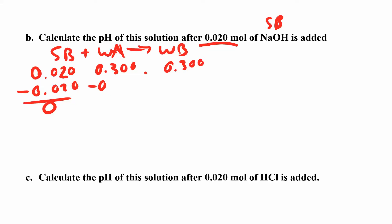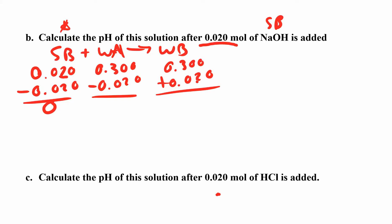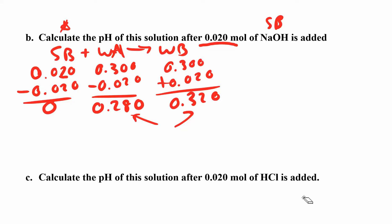Always look at the strong stuff — that's what gets subtracted and used up completely because you have less of it. I have 0.02 moles of strong base, so once 0.02 moles are used up, the reaction is done. I subtract 0.02 from the weak acid and add 0.02 to the weak base. That gives me 0.280 moles of weak acid and 0.320 moles of weak base. It's in a one-liter solution and I'm not changing the volume, so I can plug moles directly into the Henderson-Hasselbalch equation.